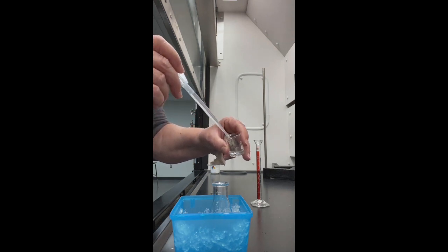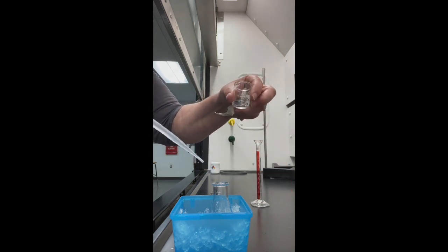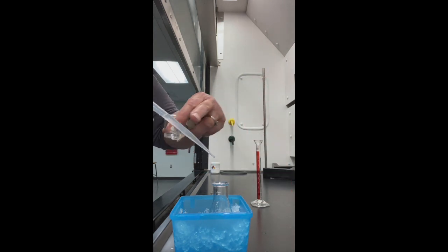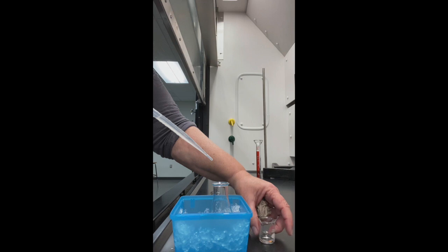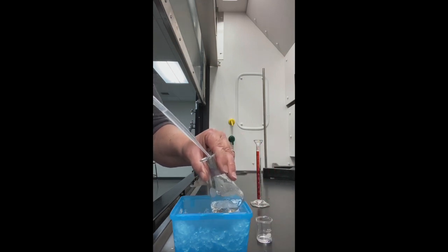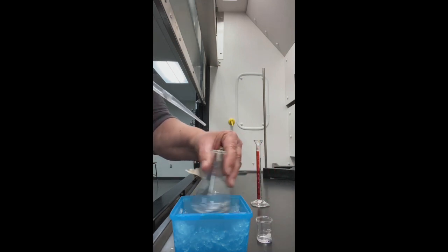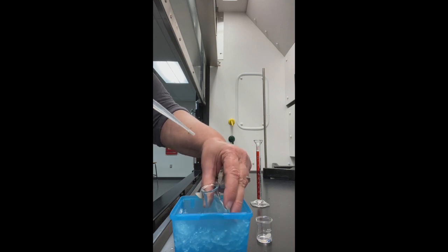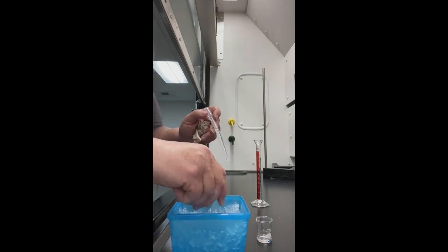I'm going to add this slowly dropwise. I had to put it in a small beaker because my transfer pipette did not fit in my 10-mil graduated cylinder. So I'm going to slowly add this dropwise with swirling.